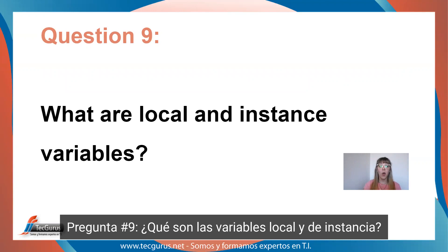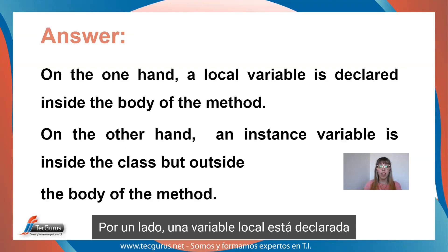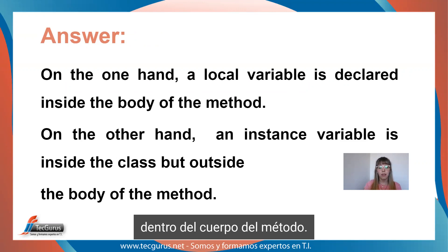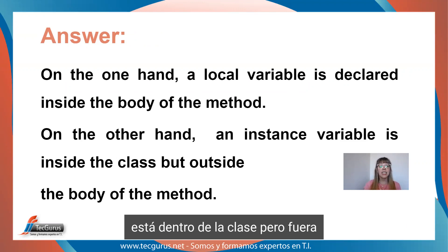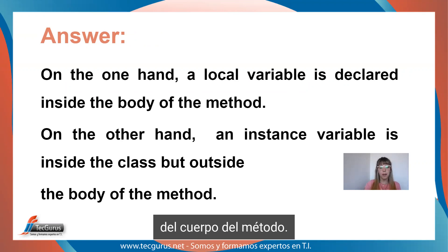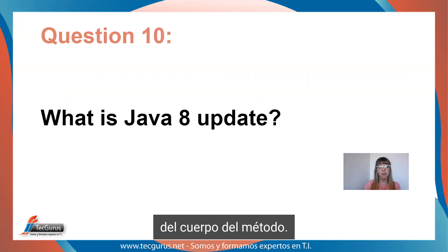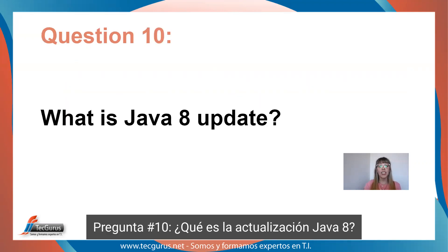Question nine. What are local and instance variables? On the one hand, a local variable is declared inside the body of the method. And on the other hand, an instance variable is inside the class but outside the body of the method.